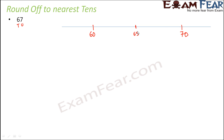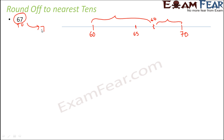At the midpoint would be 65. So 67 would lie on the side closer to 70. If you look at it, 67 is far away from 60 but comparatively nearer to 70. Therefore 67 can be rounded off to 70 and not 60. Sometimes people get confused about why 67 rounds to 70 — it is because 67 is more close to 70 than to 60.